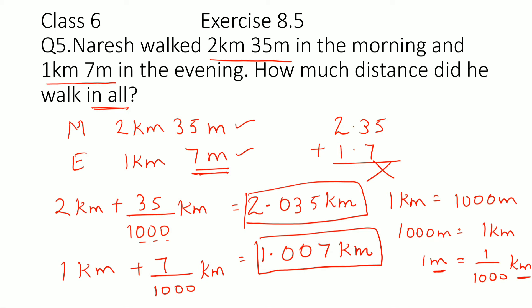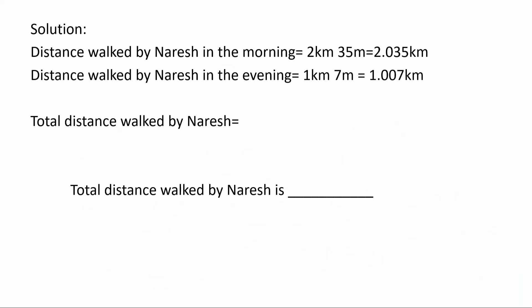So arranging the digits is important when we are adding. So this is not correct; we need to add this number and this number. So let's see the statements. Distance walked by Naresh in the morning is 2 kilometer 35 meters, so that's 2.035 kilometer.